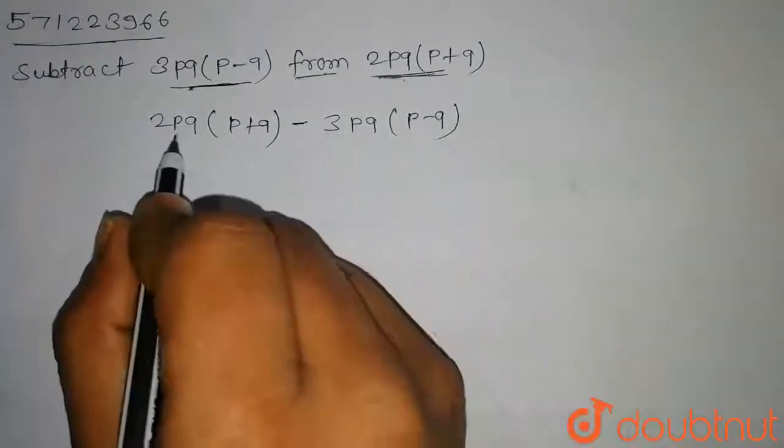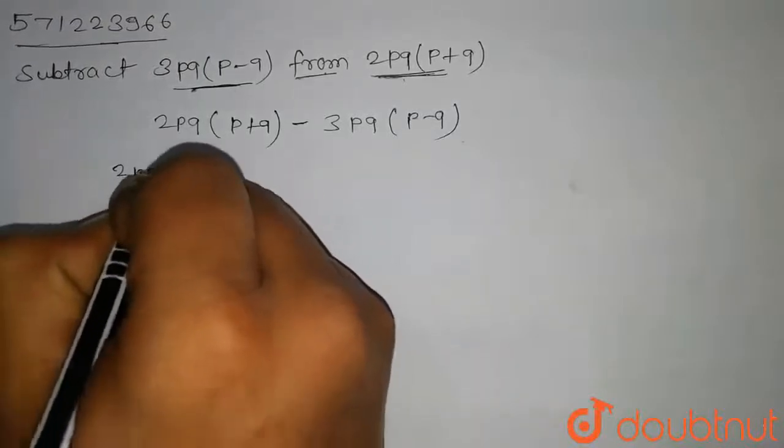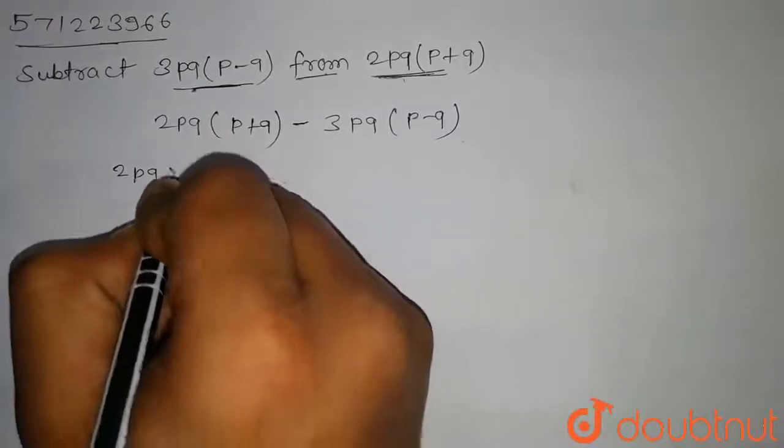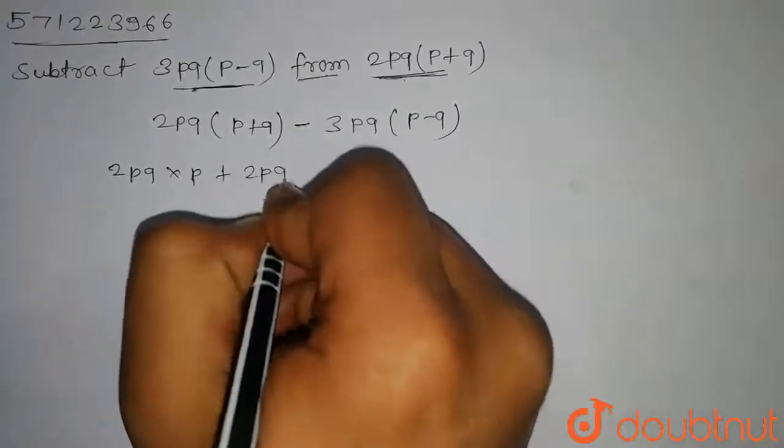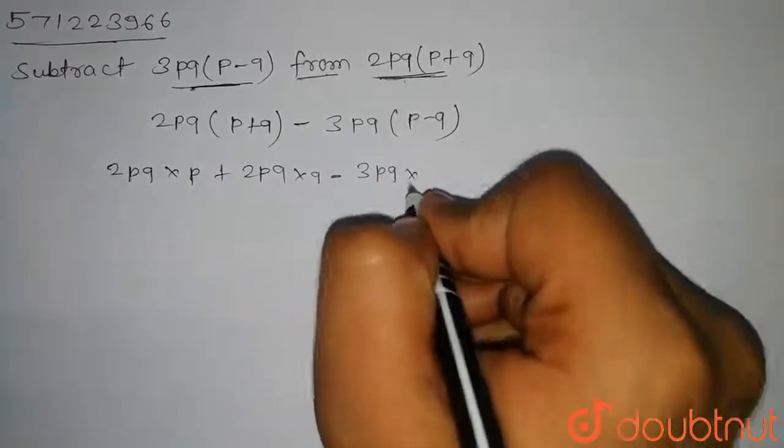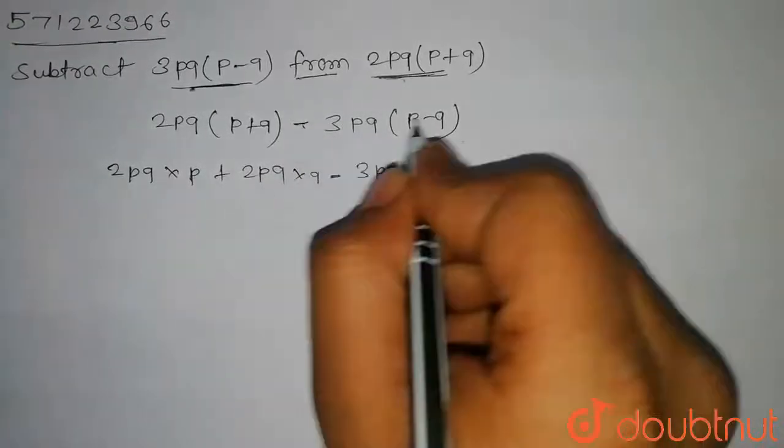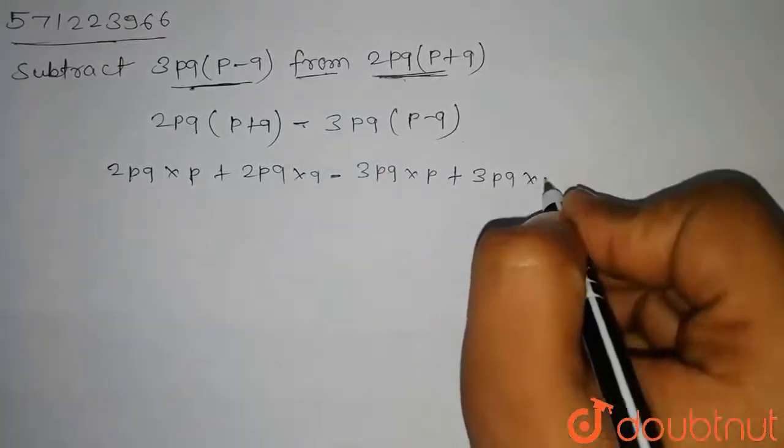Now to solve this, first of all we have to open the bracket. So on opening the bracket we get 2pq into p plus 2pq into q minus 3pq into p and this minus into minus will be plus 3pq into q.